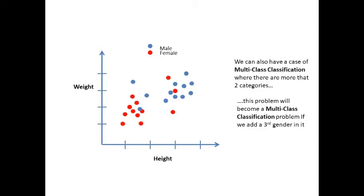This problem will become a multi-class classification problem if we add a third gender in it. We have got a basic understanding of supervised learning and its two branches in regression and classification. We will discuss each of these topics in detail in the coming days. For now, let's jump into the lake of unsupervised learning.